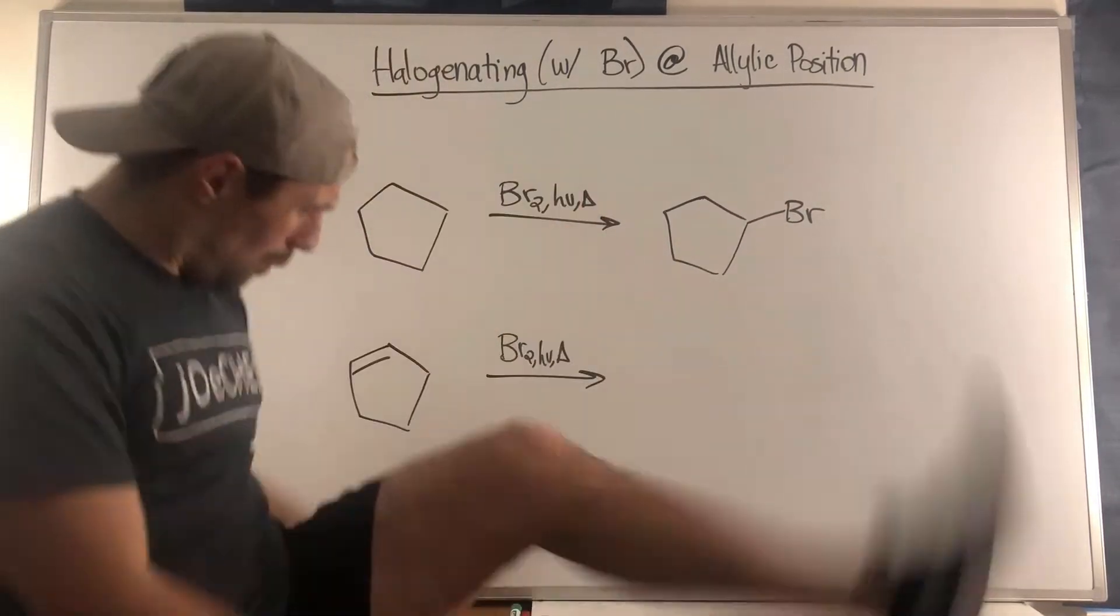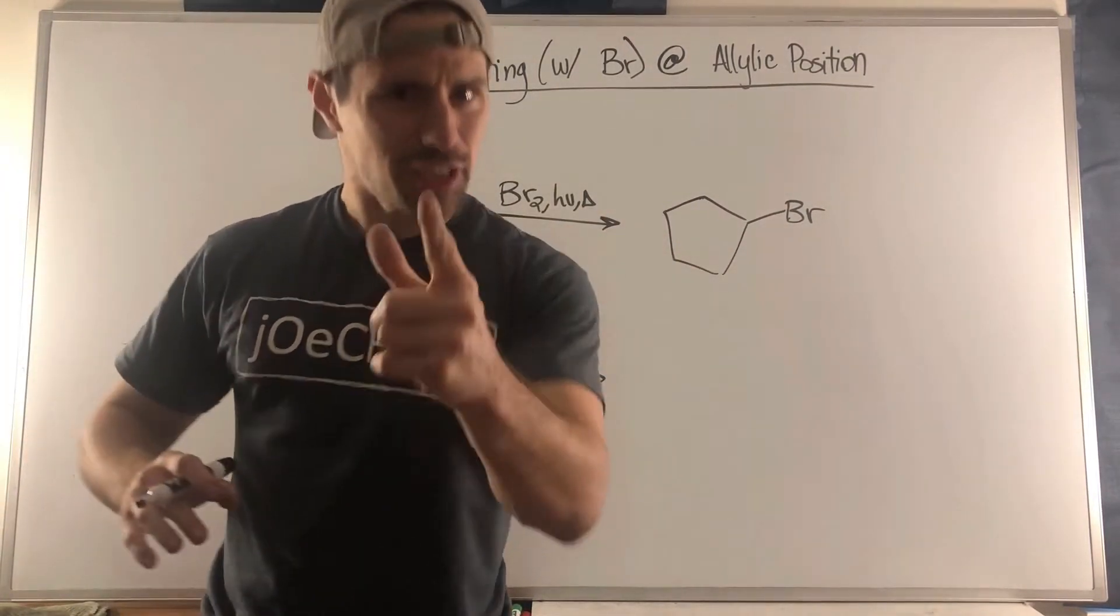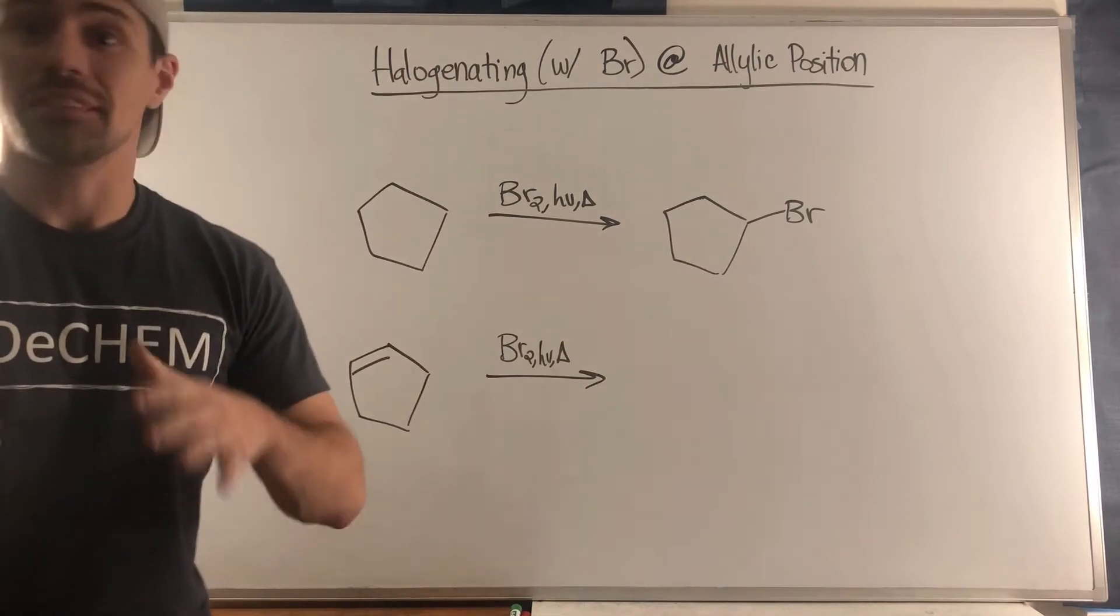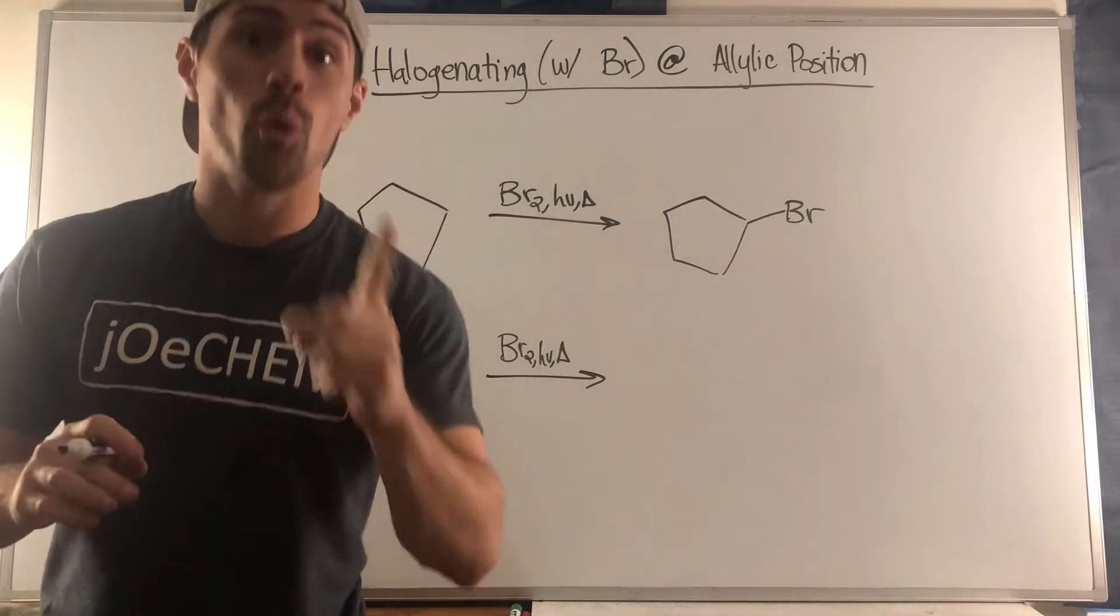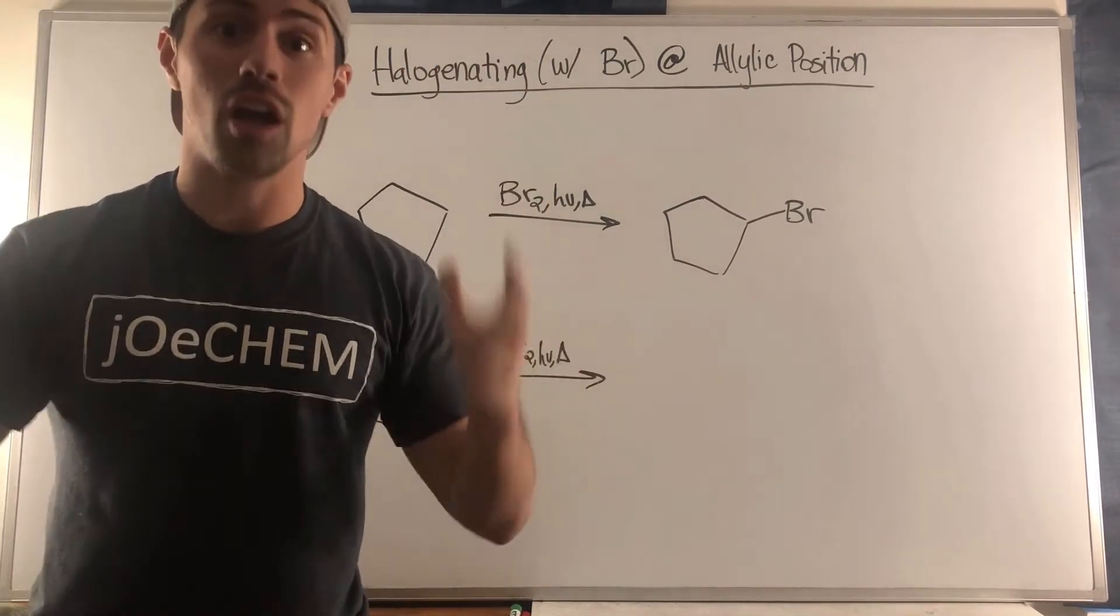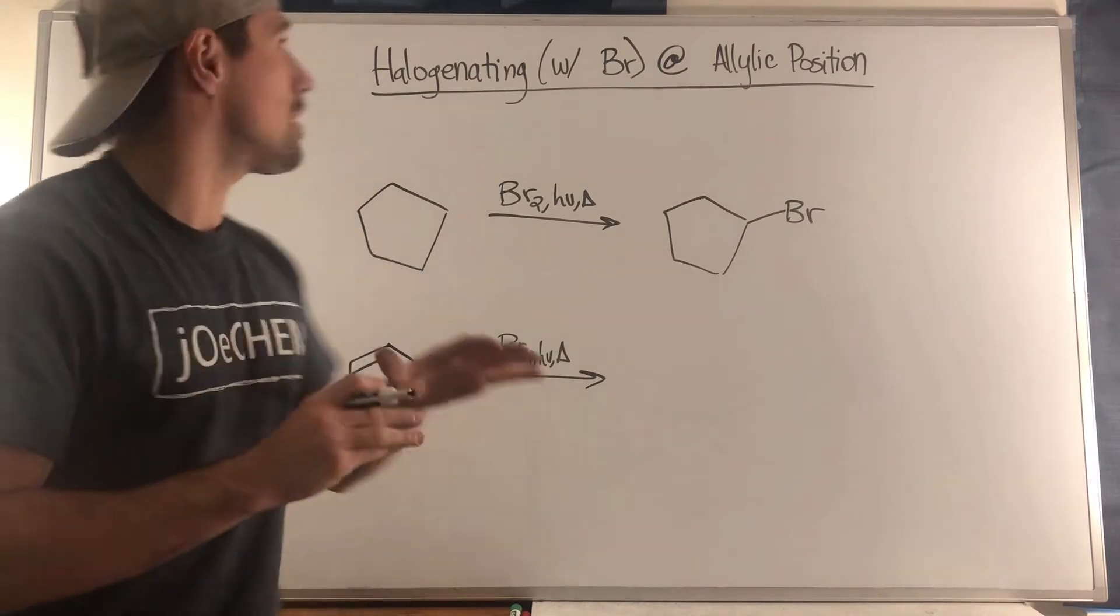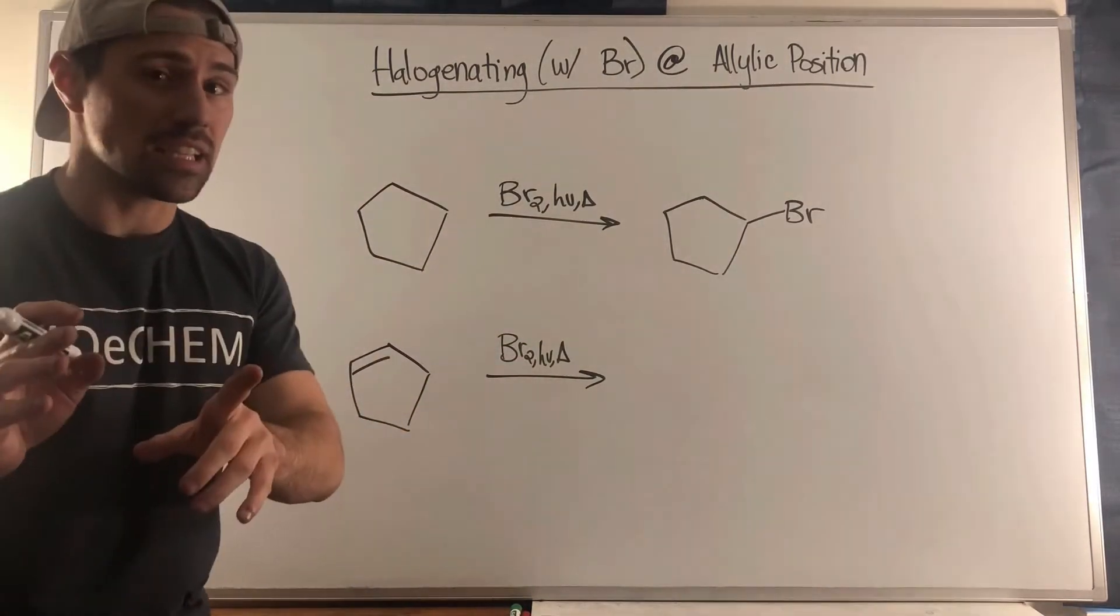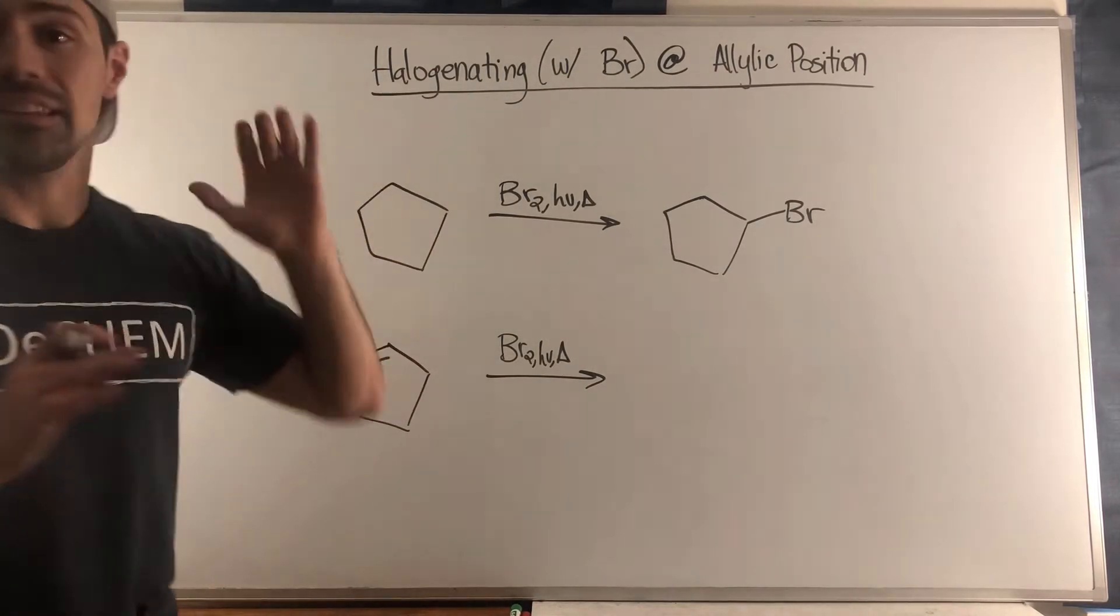Hey gang, welcome back for another video here on Jochem. This is going to be a short but important video in terms of conjugation. I want to talk about halogenating, and specifically we're only going to be doing this with bromine at the allylic position.